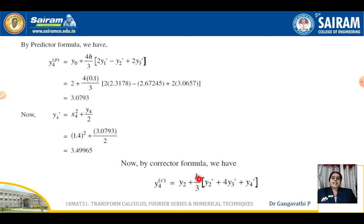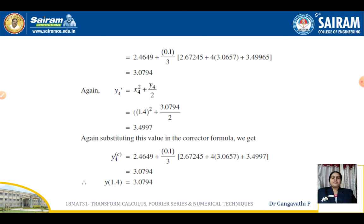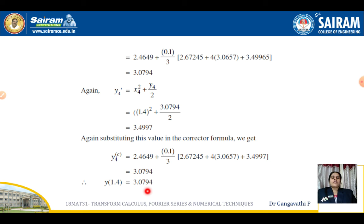Substitute into the Corrector Formula — writing the formula is mandatory, as marks are awarded for it. y₄c = y₂ + (h/3)(y₂' + 4y₃' + y₄'). Substituting and simplifying, we get y₄c = 3.0794. Since it asks for the corrector formula twice, apply it again: evaluate a new y₄', substitute back, and the final answer for y at x = 1.4 is 3.0794.